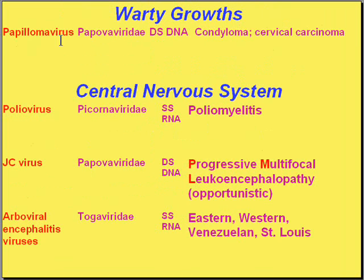The papillomaviruses — human papillomaviruses, HPV — in the papovaviridae family, double-stranded DNA, can't really be classified with the skin eruptions or skin lesions. They have a tremendous affinity for squamous mucosa but not necessarily skin. We can have an HPV infection in a non-keratinized stratified squamous mucosa like the cervix, vagina, or esophagus — stratified squamous mucosas that are not part of skin.